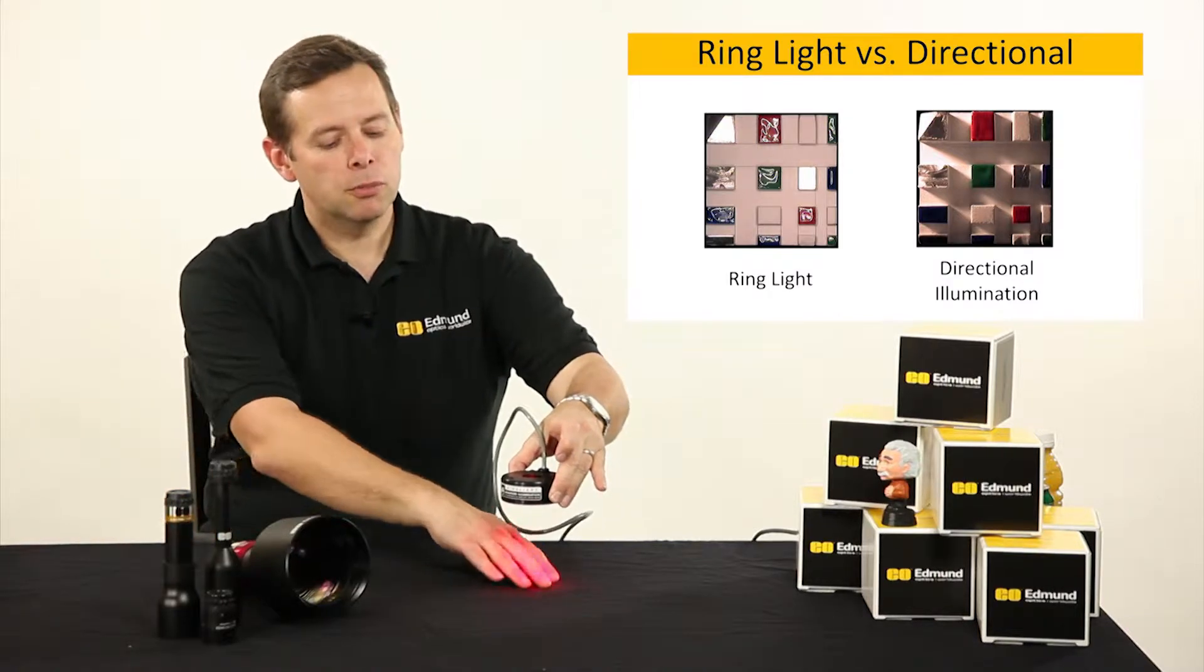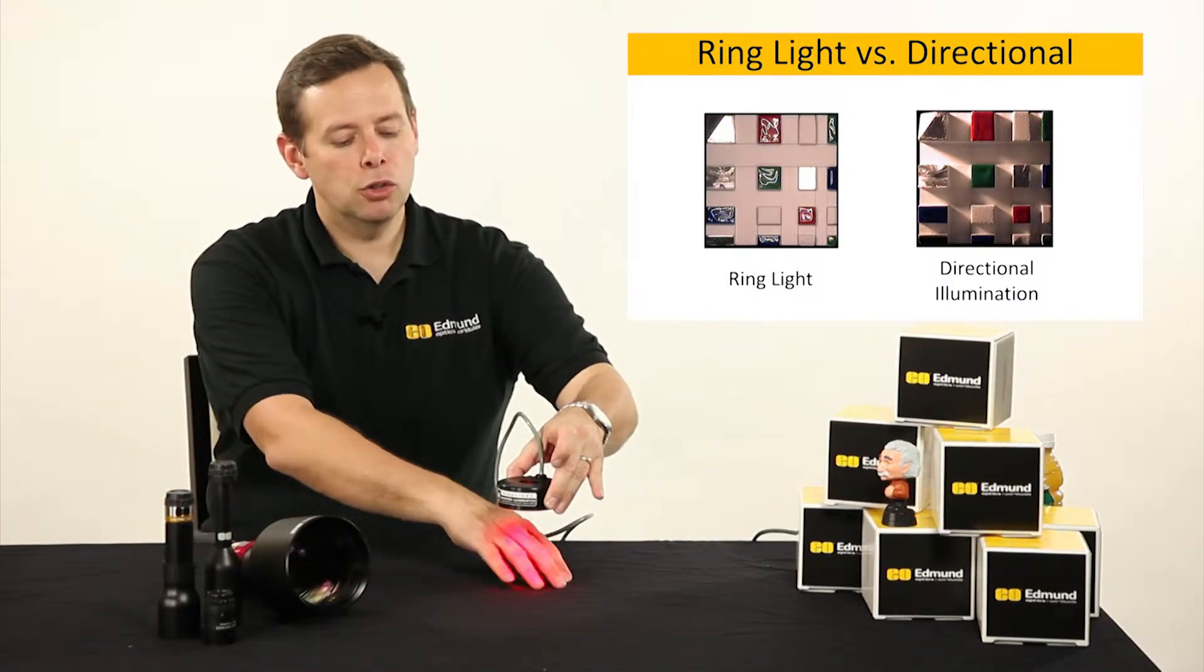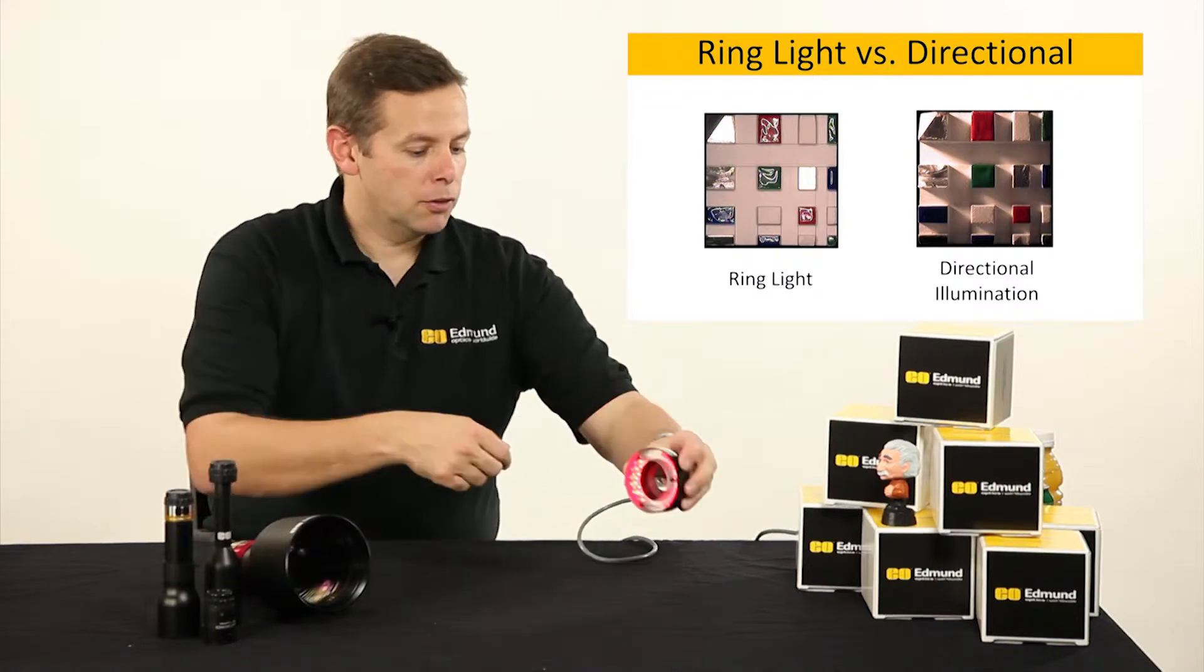Now, the light comes together at some point, at some good distance away, where it's going to create a uniform illumination coming from all directions around the circle.